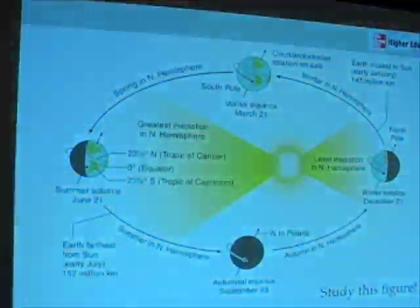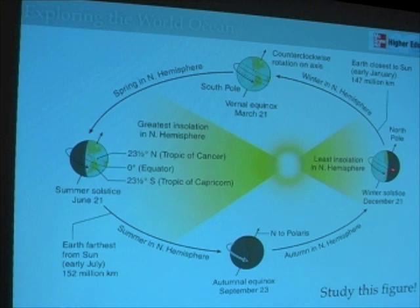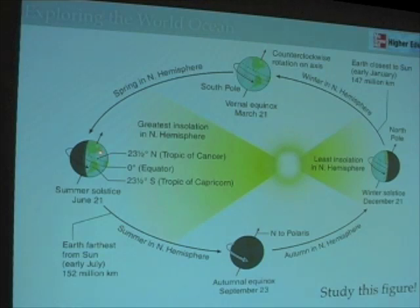What that means is that at one time of the year, Earth's northern hemisphere is pointed towards the sun. And at another time of year, the northern hemisphere is pointed away from the sun. So as Earth orbits around the sun, it's either tilting away from the sun, or the sun is directly overhead, or pointing towards, or pointing away again, as the Earth orbits around the sun.